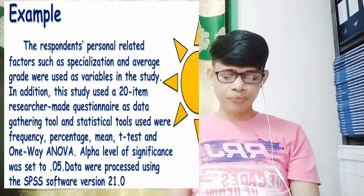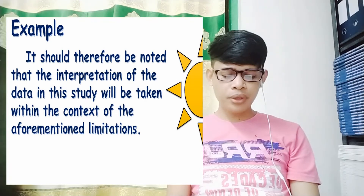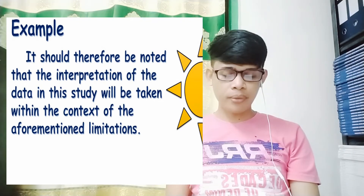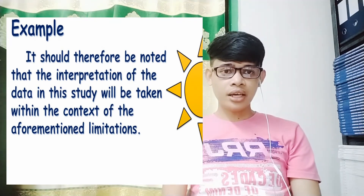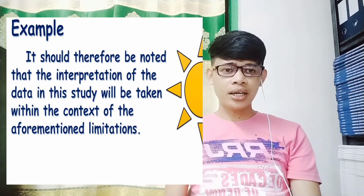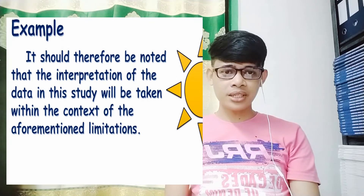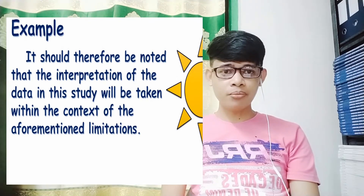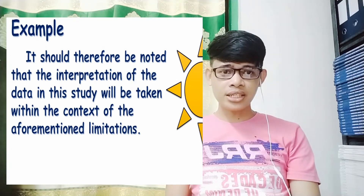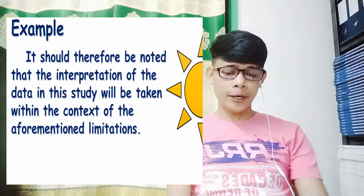The last paragraph of the scope and limitations reads: 'It should therefore be noted that the interpretation of the data in this study will be taken within the context of the aforementioned limitations.' This simply tells readers that only the things mentioned in the scope and limitations will be considered the coverage or focus of the study, and things not mentioned will not be included.